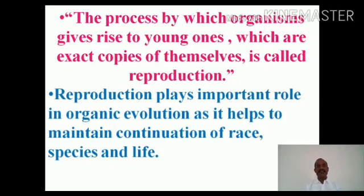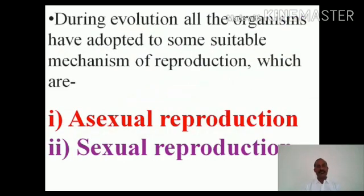Reproduction plays an important role in organic evolution as it helps in maintaining the continuation of race, species, as well as life. All organisms, starting from amoeba up to the highly developed mammals, every group has adopted some sort of mechanism for reproduction. These mechanisms generally fall into two categories: the first one is asexual reproduction and the second one is sexual reproduction.